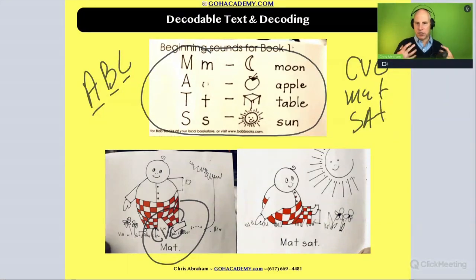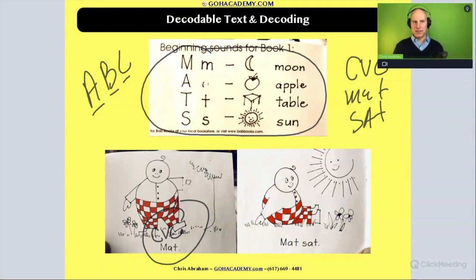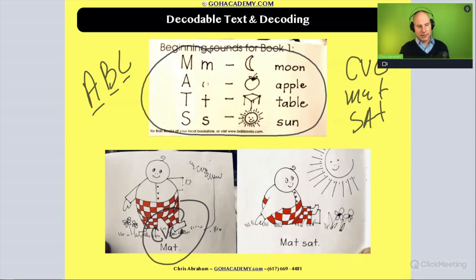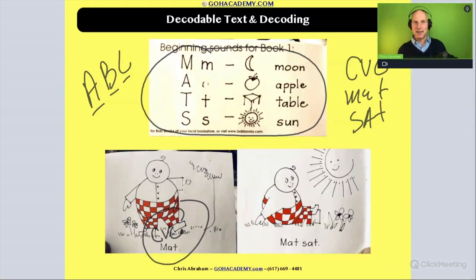If a child just knows how to decode a couple of these letters, like M, A, T, S — they know how to do that letter-sound correspondence. When they read this very basic text, they're going to use that letter-sound correspondence and the alphabetical principle to decode these words. So they'll go M-A-T — mat, S-A-T — sat. Mat sat. They just read their first sentence.